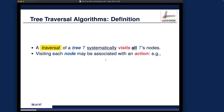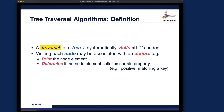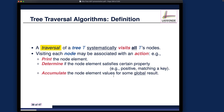We want to visit each node, and each node may be associated with an action. Let me give some examples. You may want to print the node, or determine if the root element satisfies a certain property — such as whether the element is positive, or whether it matches a particular key value, either equal to it or not equal to it.